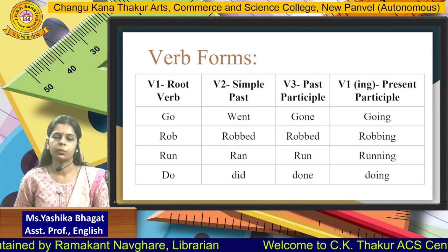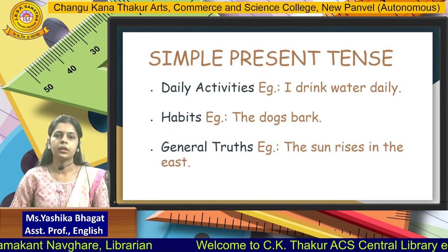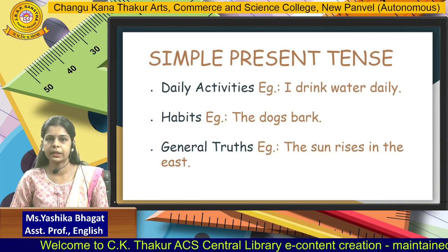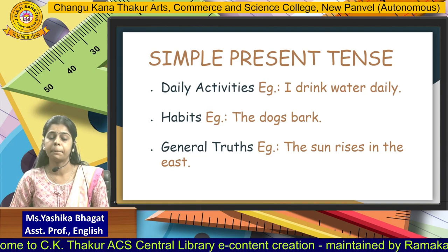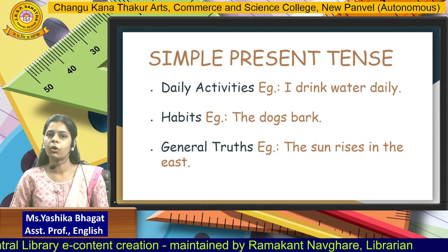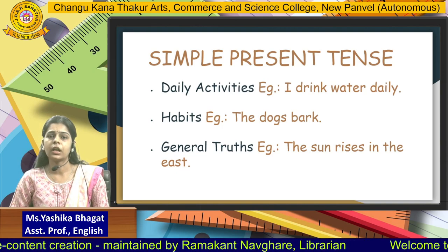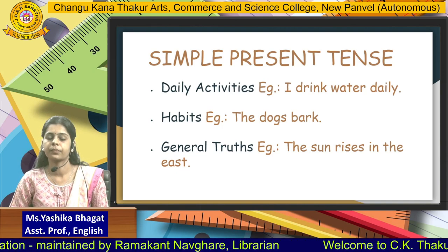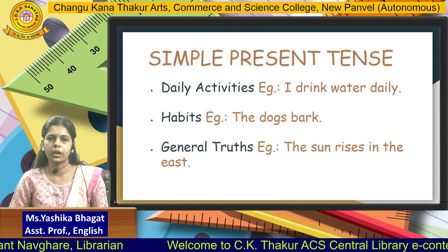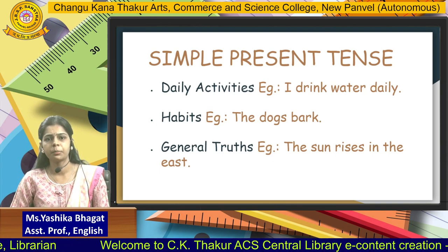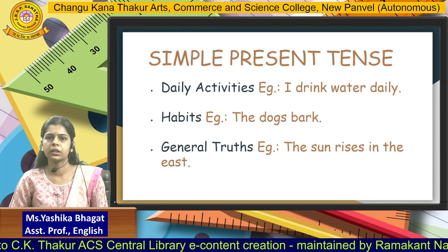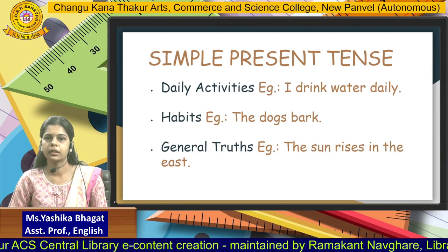Once we are clear with the basics, we can now move on to the first type of tense: the simple present tense. You can easily identify the type of sentence when you know the tense's topic well, but students face difficulties in understanding where exactly to use the given tense. So today we will also learn the uses. The first condition is whenever you are going to talk about daily activities — activities which are a part of your routine. For example, 'I drink water daily.' The word daily reflects that the action is a part of your routine, so 'I drink' is simple present tense.